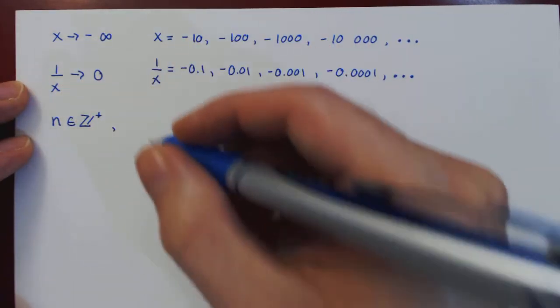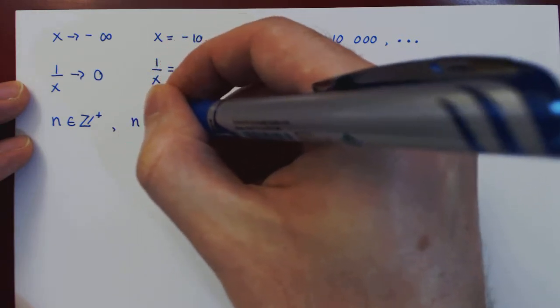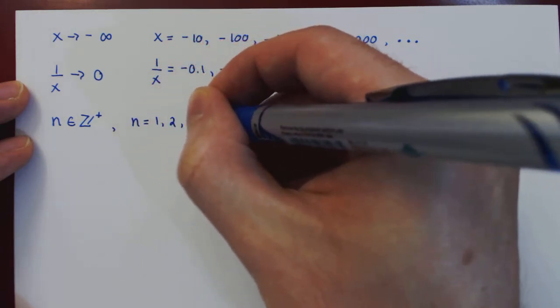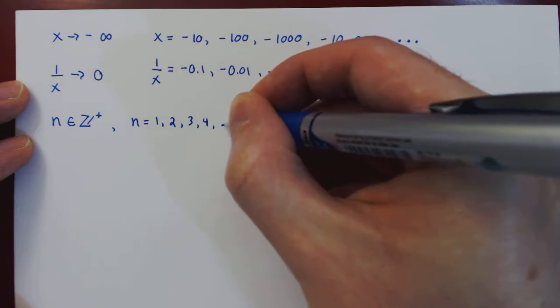So first let n be a positive integer. So this means that n is equal to 1, 2, 3, 4, and so on.